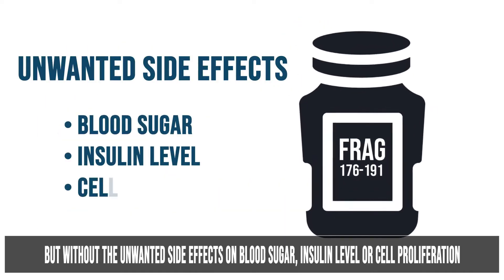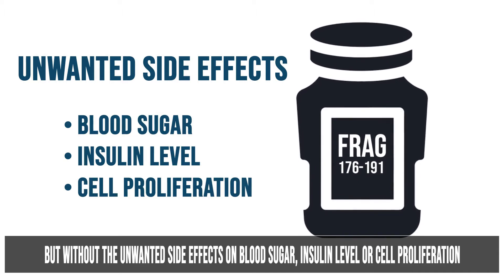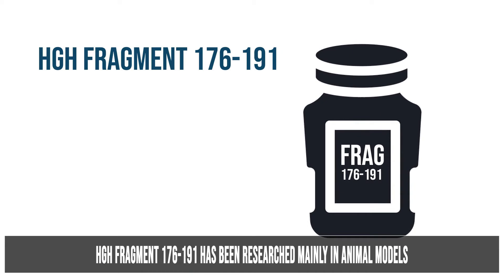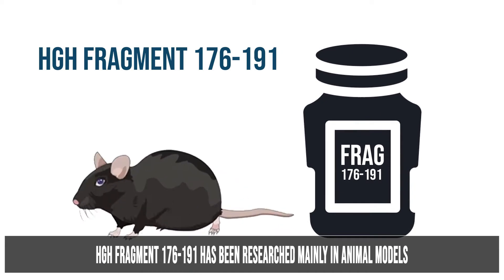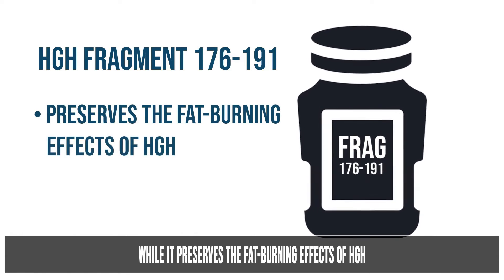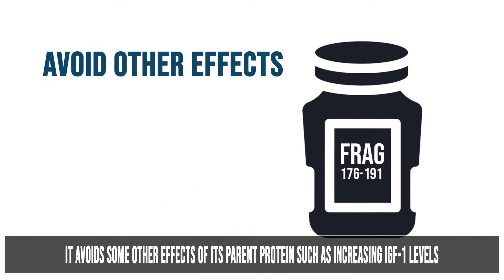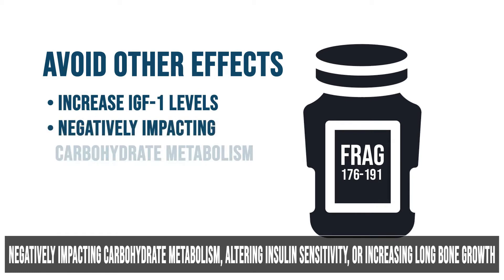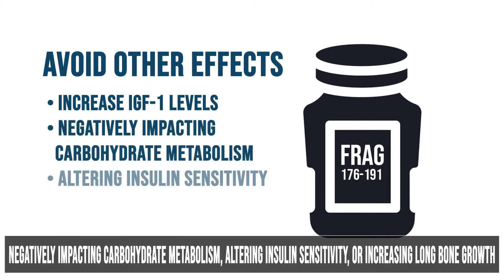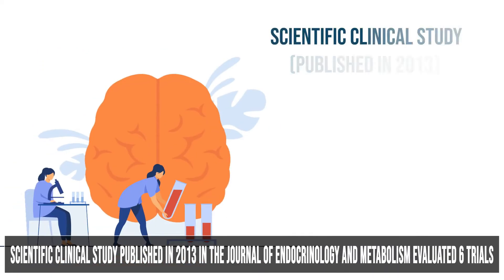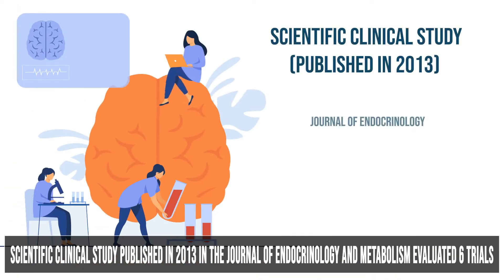HGH Fragment 176-191 has been researched mainly in animal models. While it preserves the fat burning effects of HGH, it avoids some other effects of its parent protein, such as increasing IGF-1 levels, negatively impacting carbohydrate metabolism, altering insulin sensitivity, or increasing long bone growth.